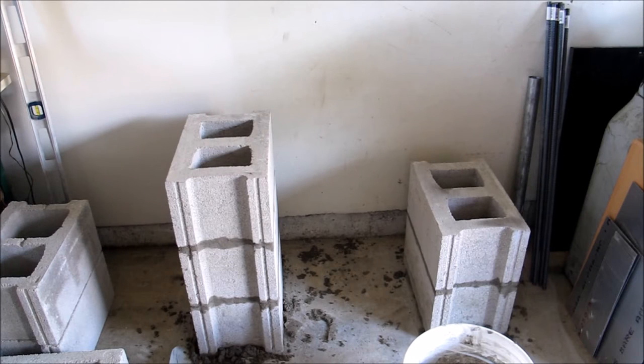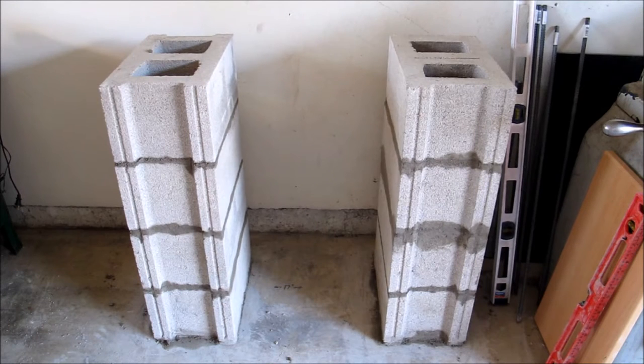Once you get the base set, it's a fairly straightforward process. You just keep adding mortar and putting bricks one on top of each other. I routinely check to make sure that they were level to each other. You can adjust as you go by adding or subtracting the amount of mortar you put in between the bricks, but I tried to keep it relatively consistent.